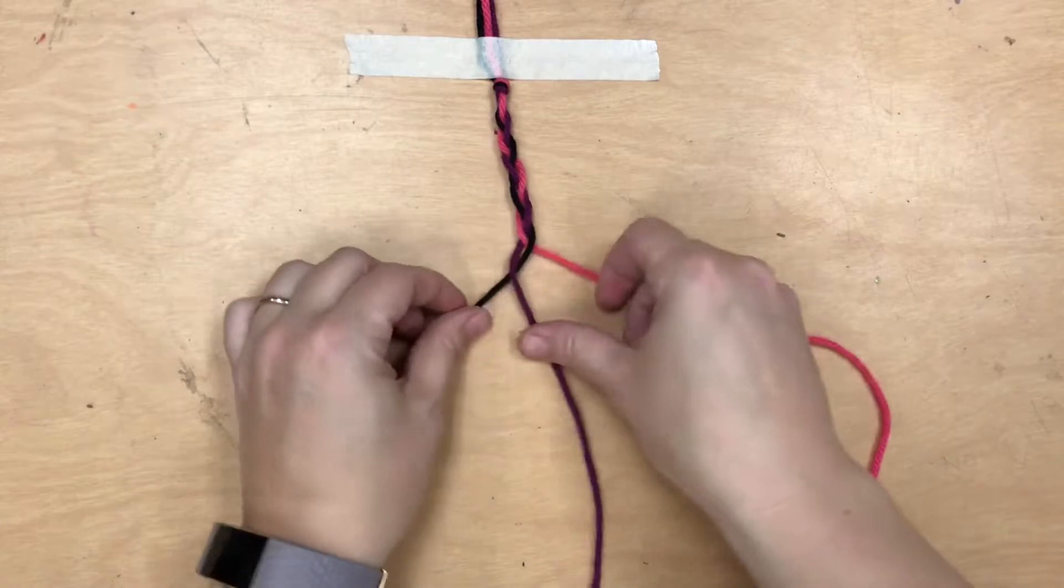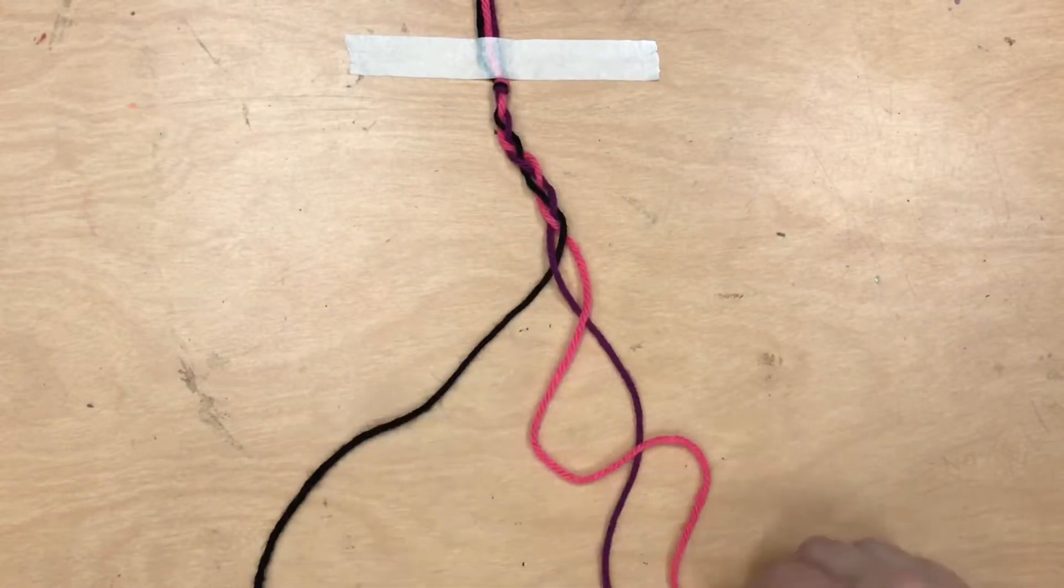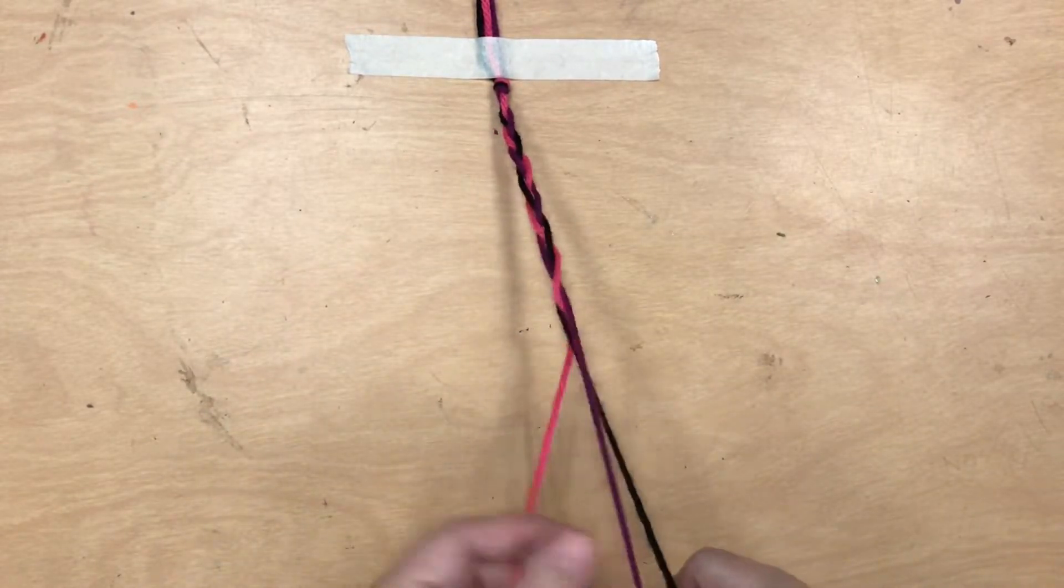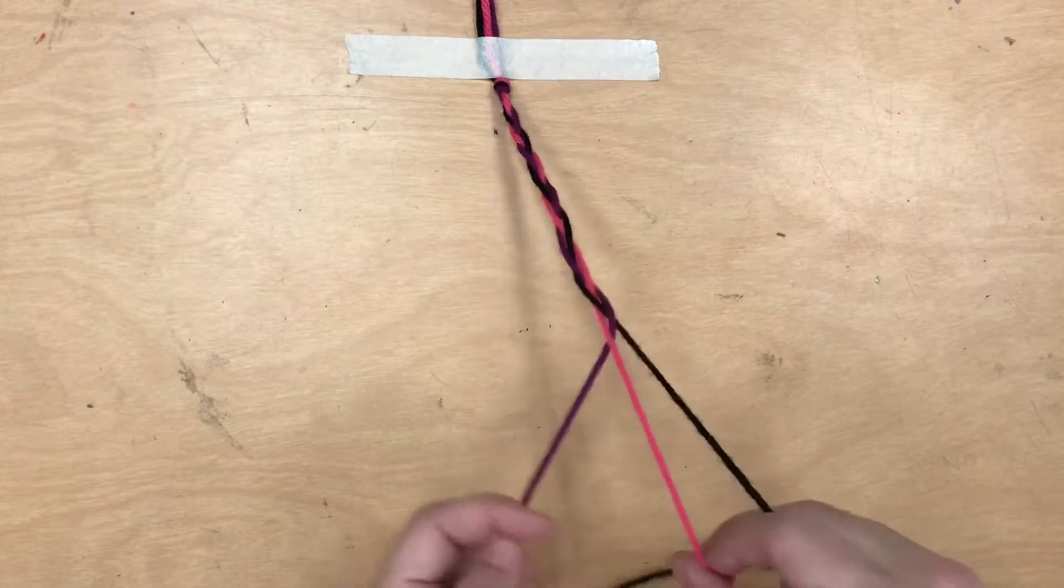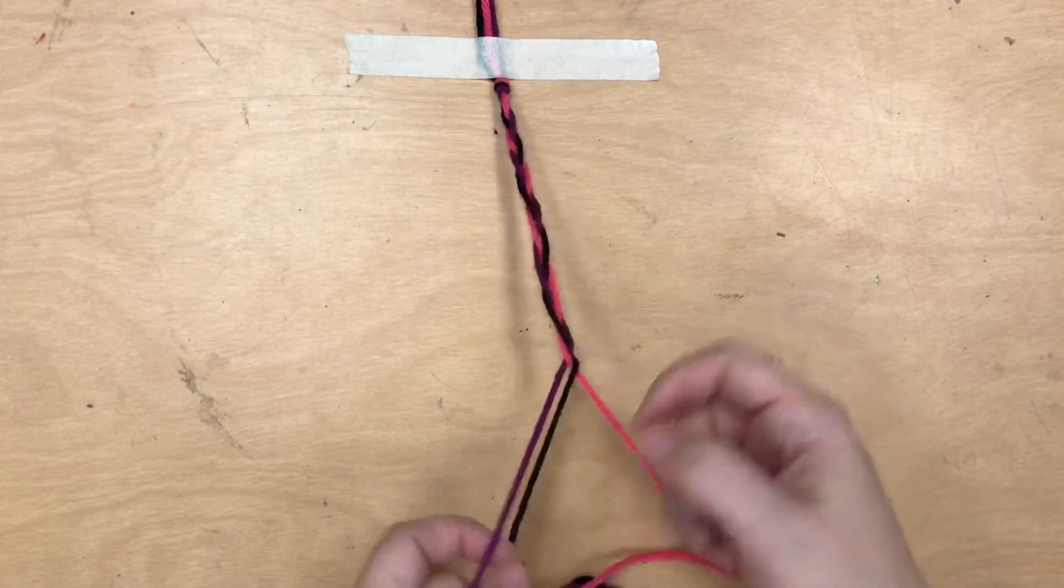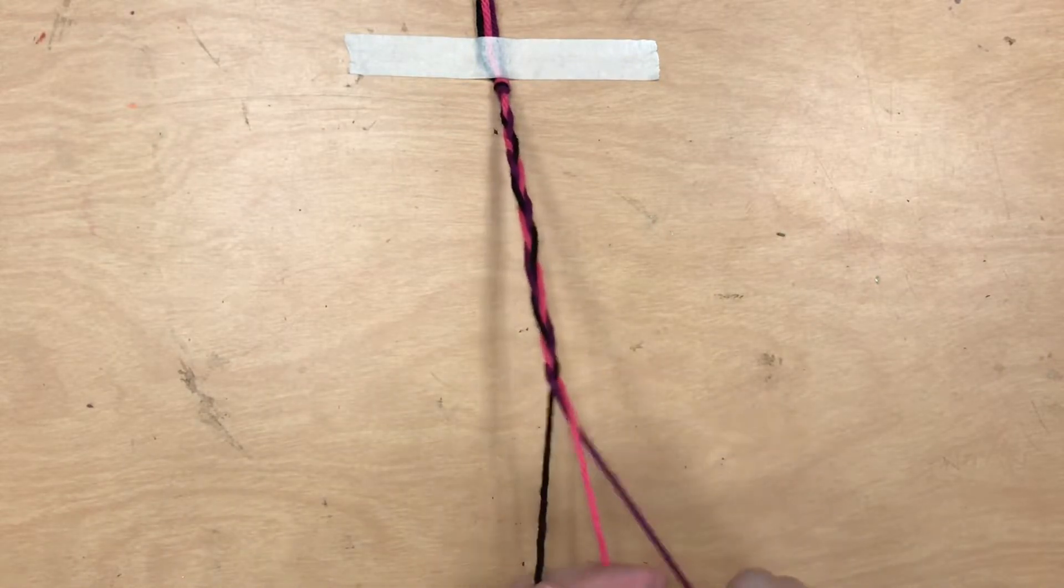There are all kinds of different braiding, some braiding where you braid under the middle. But for this first braid you might be doing, you're alternating left and right going over the middle string. For you to see really easily I used three different colors, but you can use all the same color or whatever you would like to do.